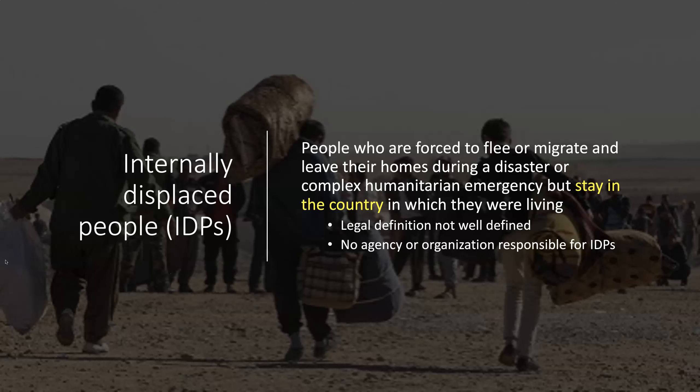Internally displaced people, or IDPs, are people who are forced to flee or migrate and leave their homes during a disaster or complex humanitarian emergency, but they stay in the country in which they're living. The legal definition is not well defined, and the downside is that no agency or organization is responsible for IDPs.